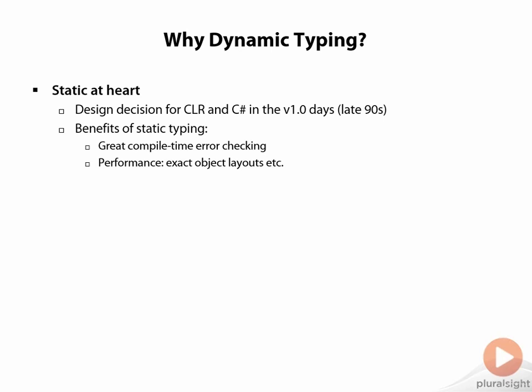There are a lot of benefits to using static typing. First of all, the developer experience is second to none thanks to static compile-time checking. Error reporting and things like IntelliSense are also fueled by static type information being available at development time. From a runtime's point of view, performance can greatly benefit from knowing the exact layout of objects based on their types. In the Common Language Runtime, every memory location in managed code — whether on the heap or on the stack — has a type associated with it. At any point during execution of verifiable and safe managed code, the runtime knows exactly what the types of your objects are.